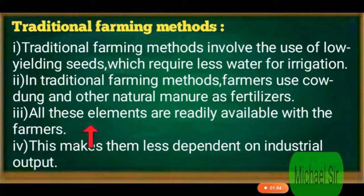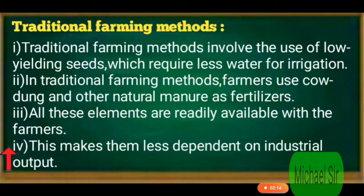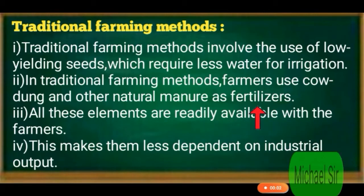Third: All these elements are readily available with the farmers. इस प्रकार के natural खाद और cow dung पहले से ही farmer के पास available होती हैं। Fourth: This makes them less dependent on industrial output — इसी कारण यह farmers industrial output पर कम depend होते हैं।